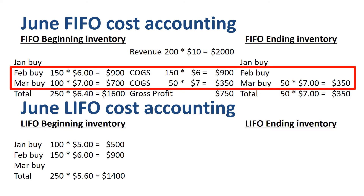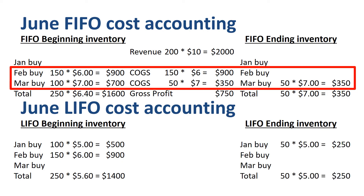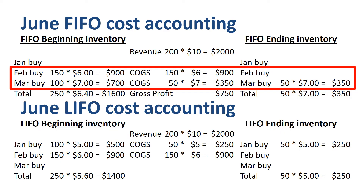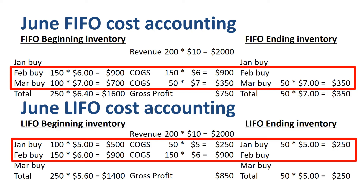Applying LIFO, what remains in inventory at the end of June is just 50 units from the January buy — 50 units at $5 each, $250 in total. If we prepare the income statement for June: revenue is 200 units times $10 = $2,000; COGS is 150 units times $6 = $900 plus 50 units times $5 = $250, so total COGS of $1,150, and therefore a gross profit of $850. Out of the remaining February buy, we took all 150 units to COGS and 50 units from the January buy into COGS. The remaining 50 units from the January buy go to the ending inventory.